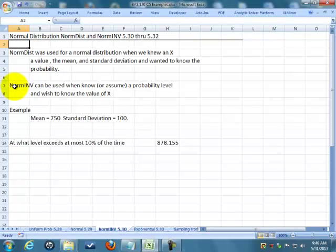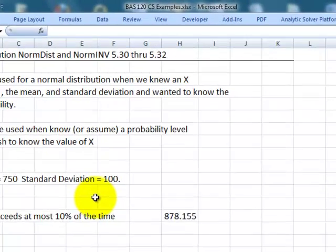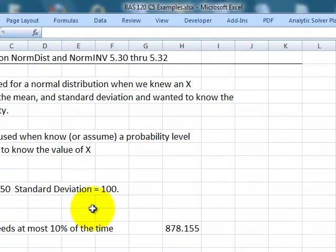NORMINV is a tool to use when we know the probability level we like. Rather than saying where does 900 fall on the curve, what if we said what number is 95th percentile, or 95% along the way? Or what values exceed at most 10% of the time? When are we more than 10% of the time? If we know the mean is 750 and the standard deviation is 100, and we want to find out at what number is 10% of the time, is it greater than?